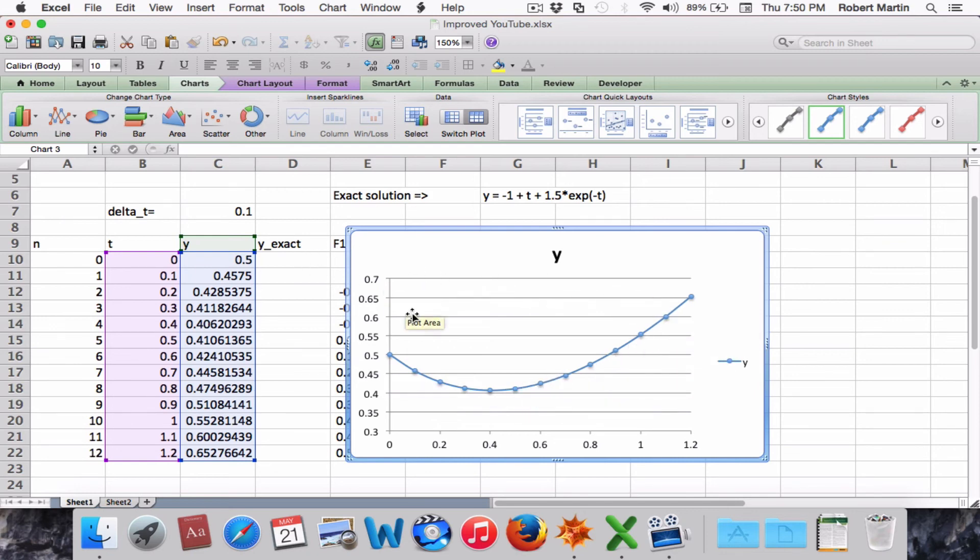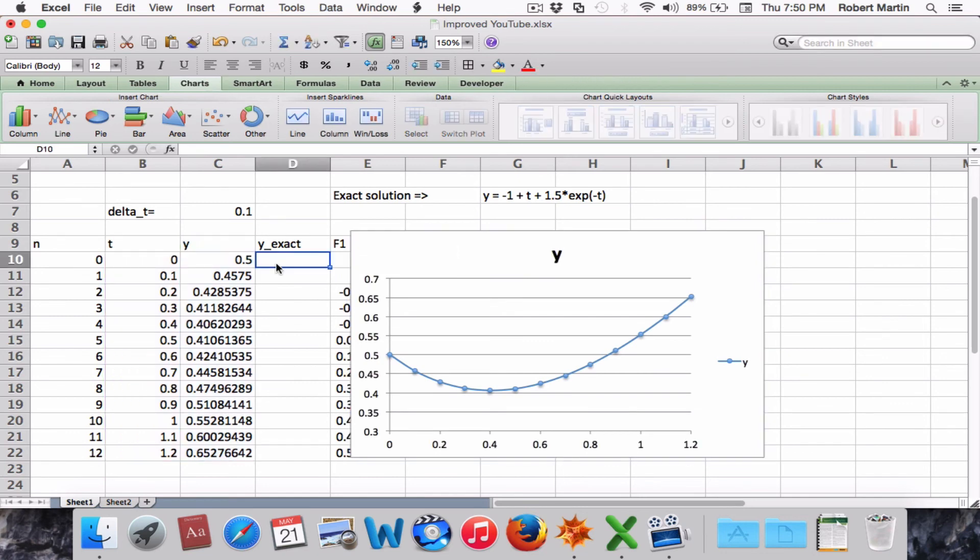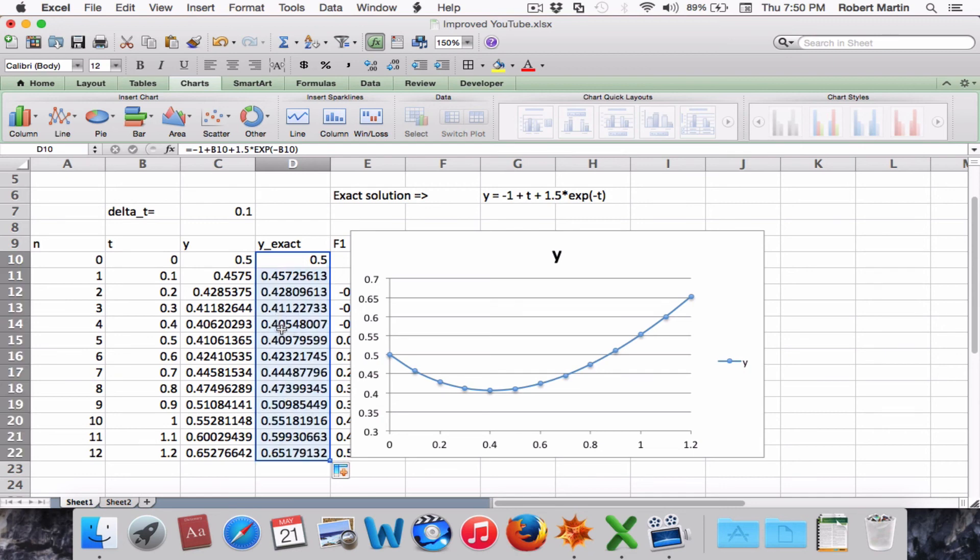Now, to compare this to the exact solution which we have given here, we will compute the exact values at these particular points by entering the formula. So the exact solution to this differential equation is negative one plus T value plus 1.5 times e to the minus T. And to compute those values we will double-click on the pull-down button and see the results.